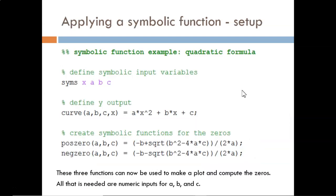Let's look at a simple, useful example of applying a symbolic function, plotting a quadratic function and solving for the zeros. The setup is shown here. First, we define the input variables x, a, b, and c as symbolic.